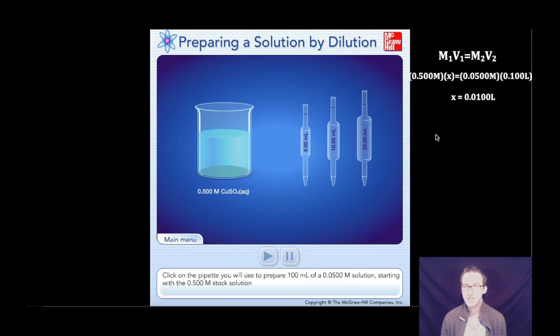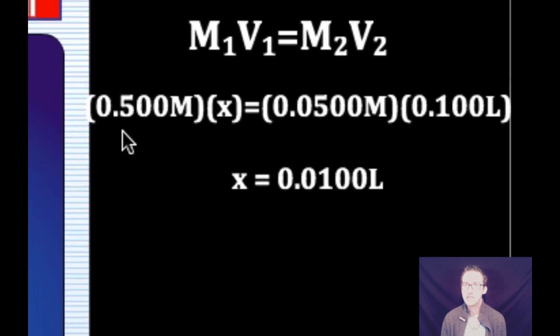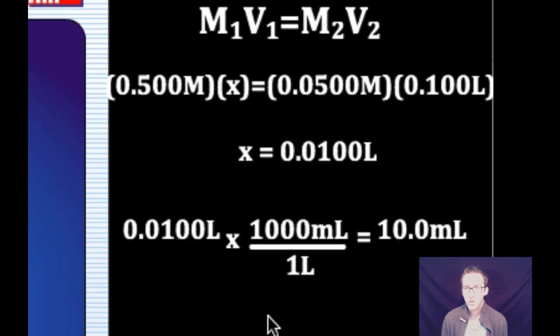Now, to figure out how these dilutions work, recognize that I've just plugged in my initial concentration of my stock solution, 0.500 molar. And I need to know what volume of that solution do I need to make this dilution to a concentration of 0.05 molar solution that has a volume of 100 milliliters. Now, notice I've converted my milliliters to liters to solve this equation because my molarity value is in moles per liter. So when I solve for X using my amazing algebra skills, notice that I find that I need 0.0100 liters. Or if I convert that back to milliliters, I need 10 milliliters.